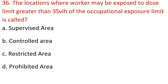Question 36: The locations where workers may be exposed to a dose limit greater than 3/10 of the occupational exposure limit is called: A. Supervised area. B. Controlled area. C. Restricted area. D. Prohibited area. Answer: D. Prohibited area.